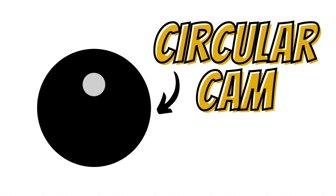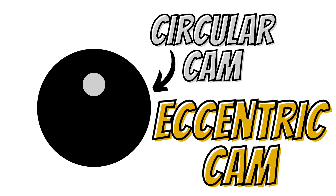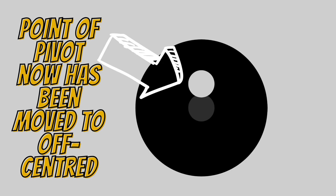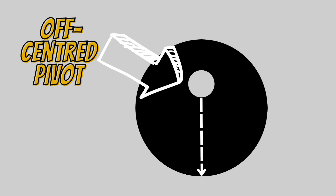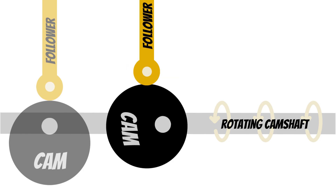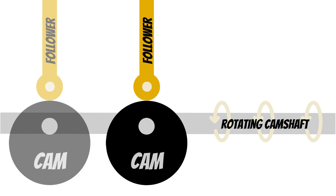These shapes are completely different but how do they affect the mechanism? The follower follows the outline of the cam and all these cams have a slightly different shape. A circular cam is also known as the eccentric cam, used as an off-centred pivot. By offsetting that pivot it increases material on one side of the cam and less on the other, causing the follower to rise and fall by a large amount.